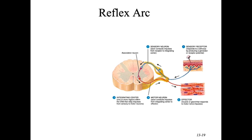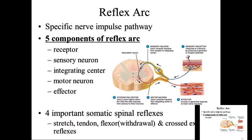There are five components of a reflex arc: a sensory receptor, a sensory neuron, an association neuron for integration, a motor neuron, and an effector. There are four important somatic spinal reflexes: the stretch reflex, the Golgi tendon reflex, the flexor withdrawal reflex, and the crossed extensor reflex.